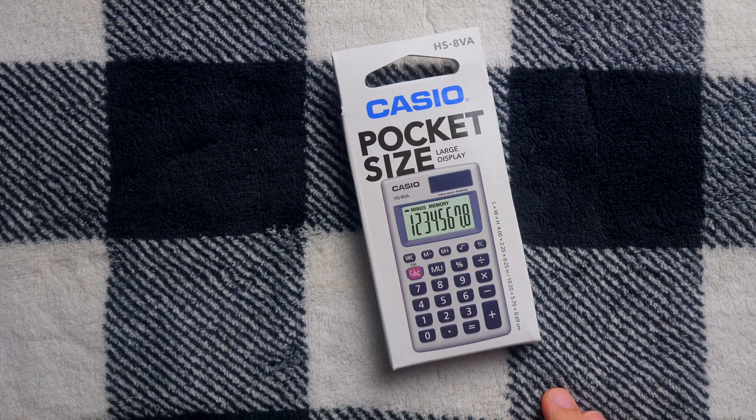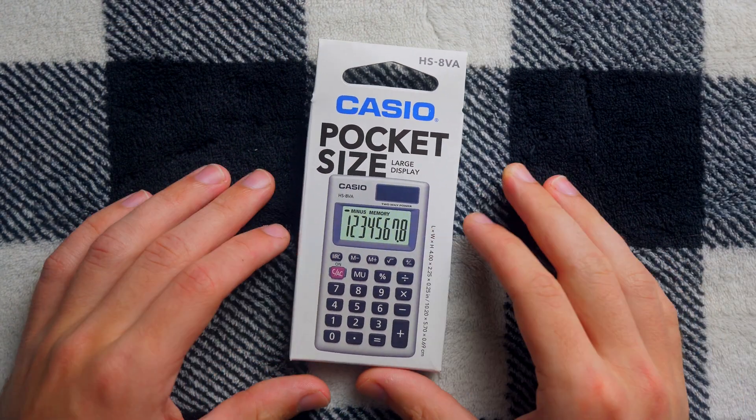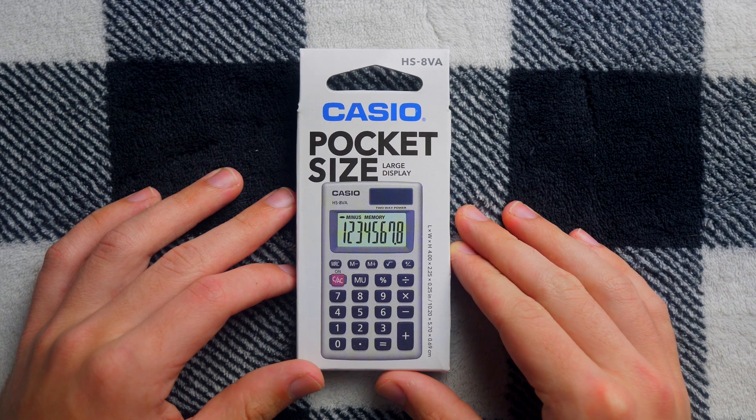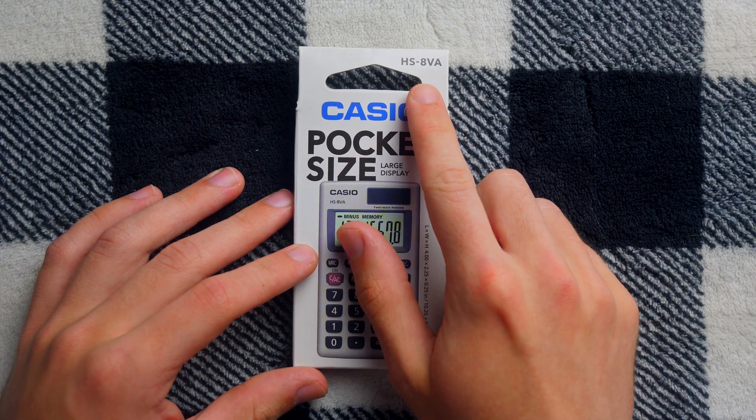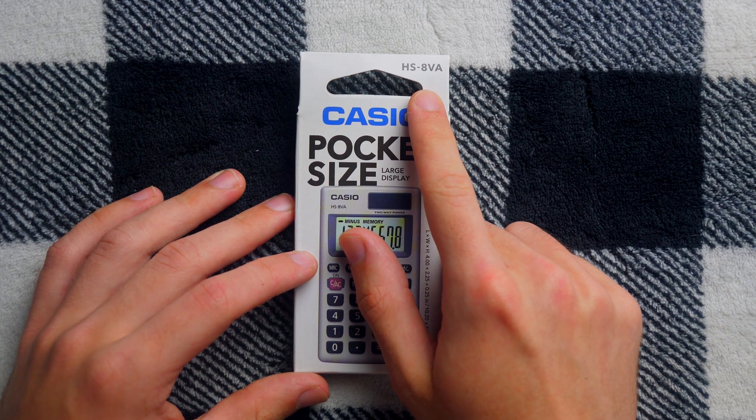I suppose the matter of size depends on the context. This is the Casio Pocket Size Calculator, apparently the model name is HS8VA.